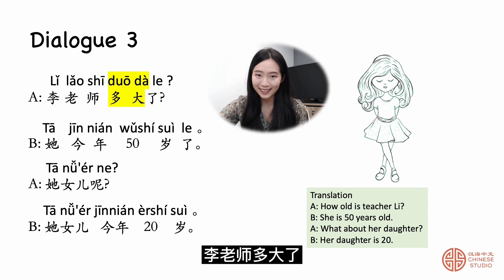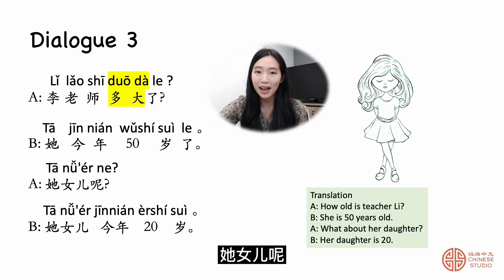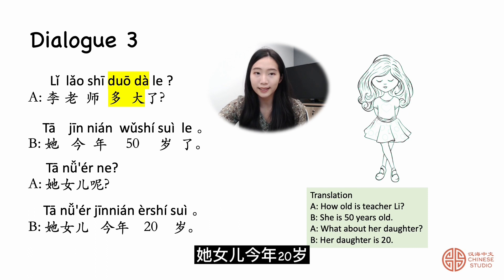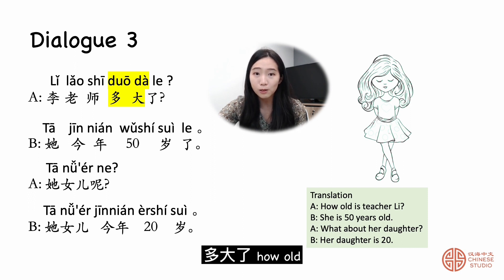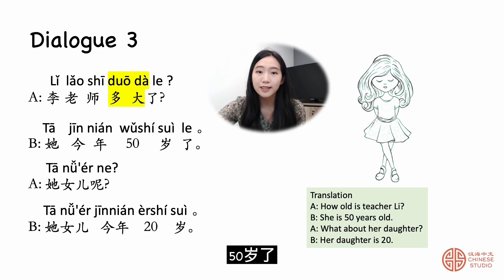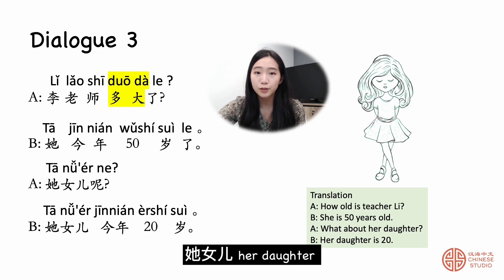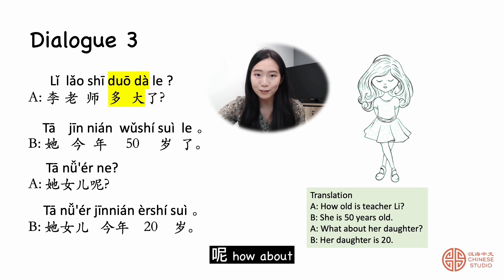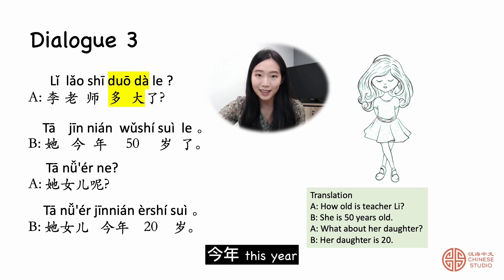Dialogue 3. 李老师多大了？她今年五十岁了。她女儿呢？她女儿今年二十岁。 李老师 — teacher Li. 多大了? — How old? 她 — she. 今年 — this year. 五十岁了 — 50 years old. 她女儿 — her daughter. 今年二十岁 — 20 years old this year.